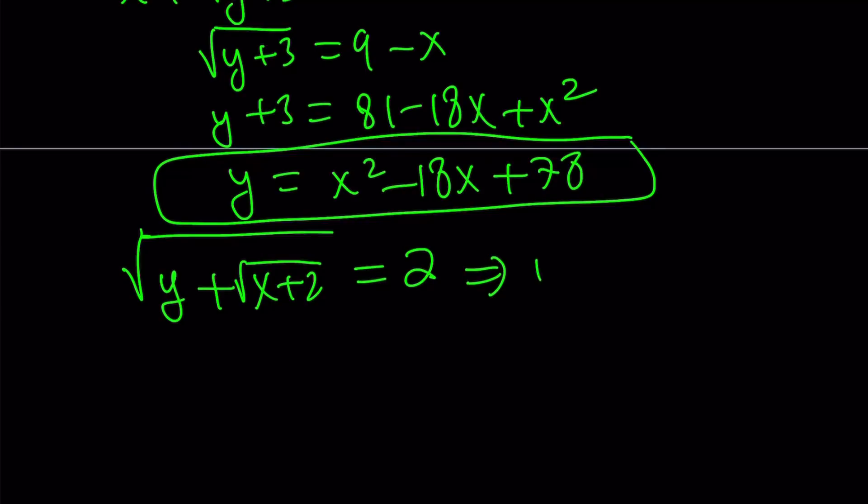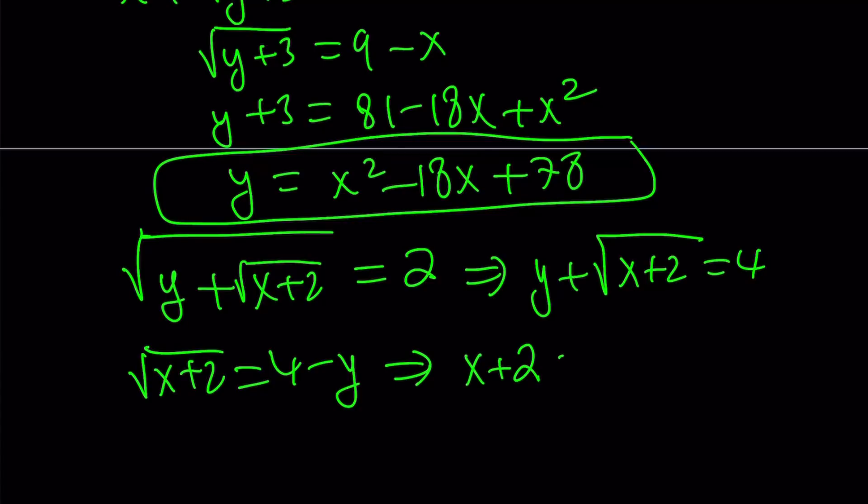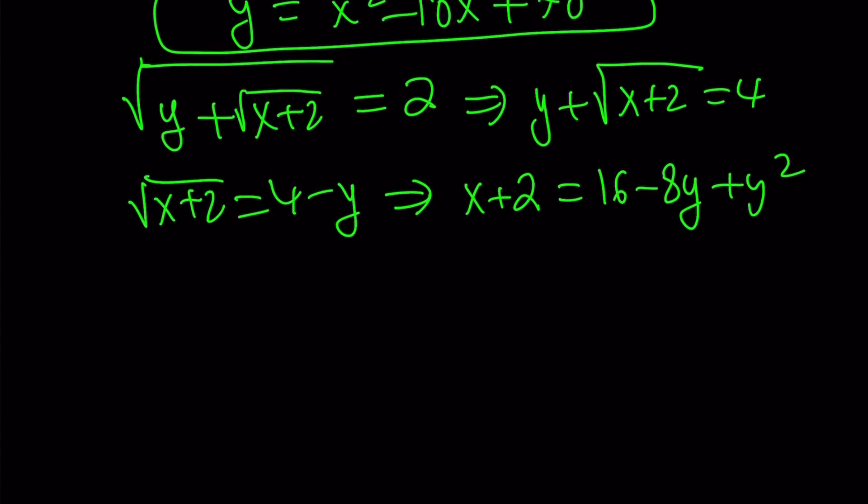So from here, let's go ahead and square both sides. That gives us 4. And then subtract y from both sides and square both sides again. You get x plus 2 equals 16 minus 8y plus y squared. All right, let's go ahead and isolate x from here. x becomes y squared minus 8y plus 14.